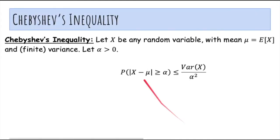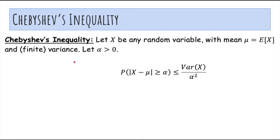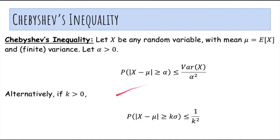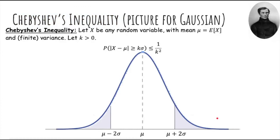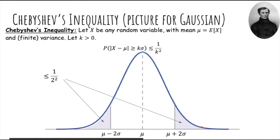Now let's talk about Chebyshev's inequality. If x is any random variable with mean mu and finite variance, we can get a tighter bound. The probability that x differs from the mean by more than alpha is at most the variance of x divided by alpha squared. You can also write this in terms of number of standard deviations: the probability that x is k standard deviations or more away from the mean is upper bounded by 1 over k squared. So the probability that x is more than 2 sigma away from the mean is at most 1 over 4.